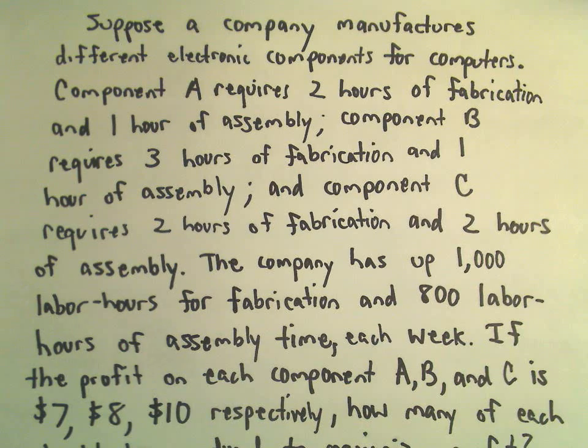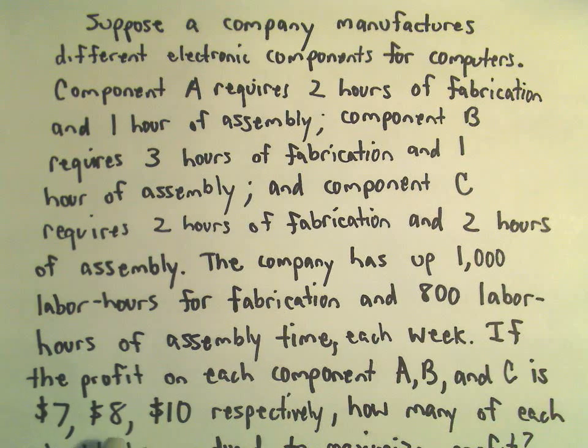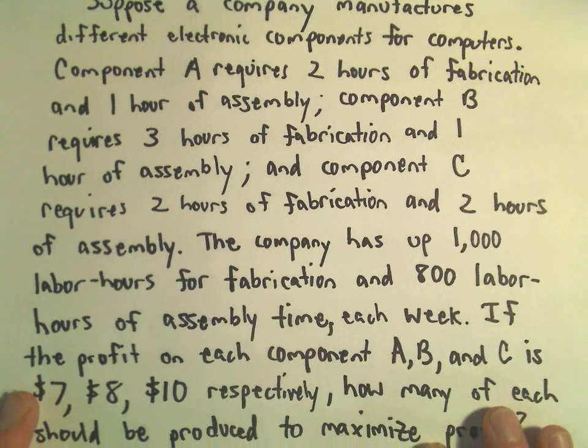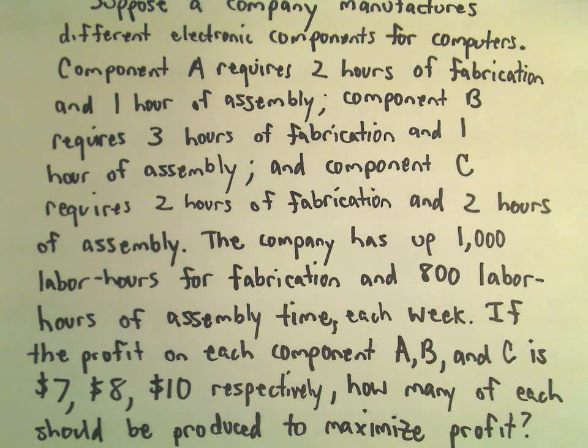Suppose we know the profit from each component A, B, and C is $7, $8, and $10 respectively. We want to figure out how many of each should be produced to maximize the profit.